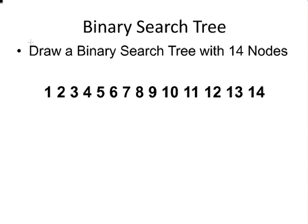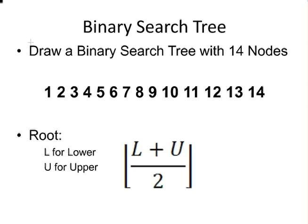What we have to identify is the root of the tree, and for all the subtrees we have to find the root of those subtrees. So the formula we're going to use is this one here. L is for lower, the lower of the two numbers, and U is for upper, which is the higher of the two numbers.